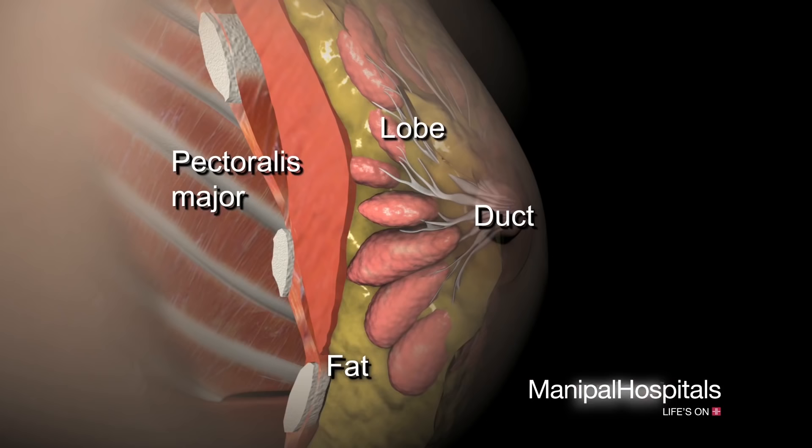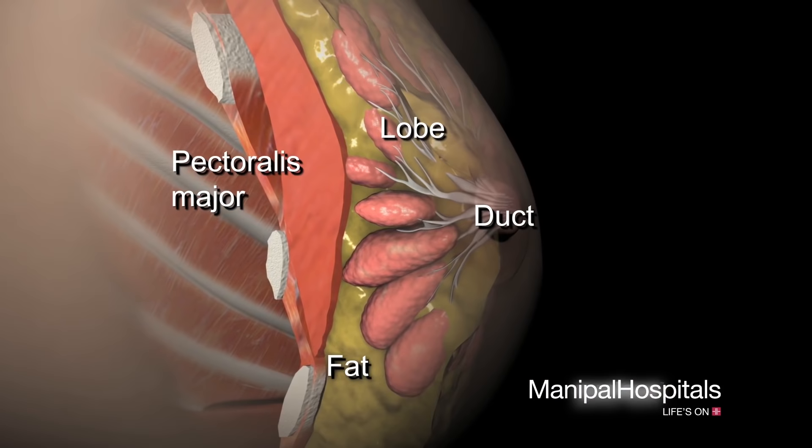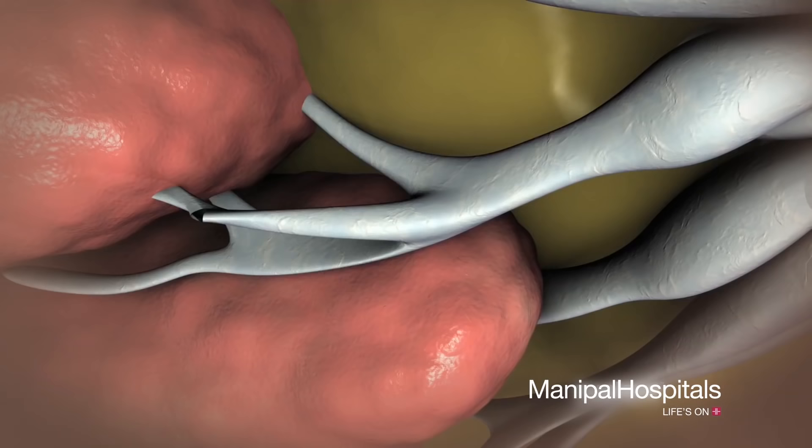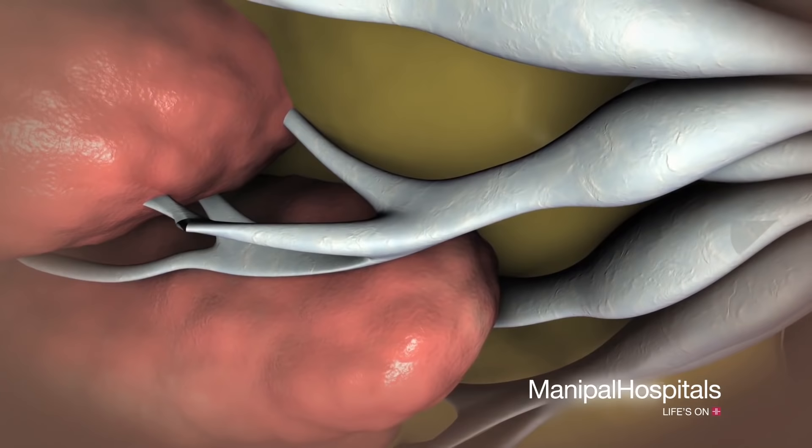Each breast is made up of lobes, lobules, and ducts. The lobes consist of smaller lobules that contain groups of tiny milk-producing glands. When a breast is producing milk, it passes through the ducts, into the nipple, where it exits the body.